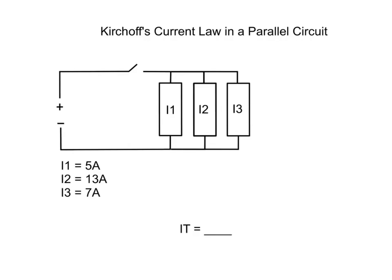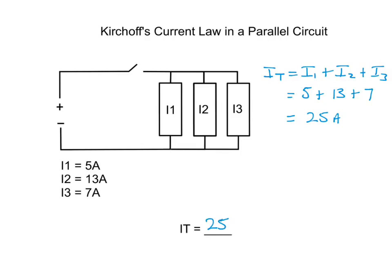So the formula we're going to use is simply this: I total equals I1 plus I2 plus I3, which will equal 5 plus 13 plus 7, which equals 25 amps. Therefore, the total current for this circuit is 25 amps.